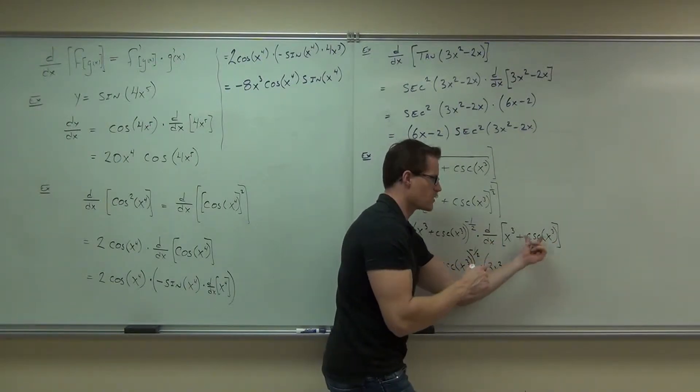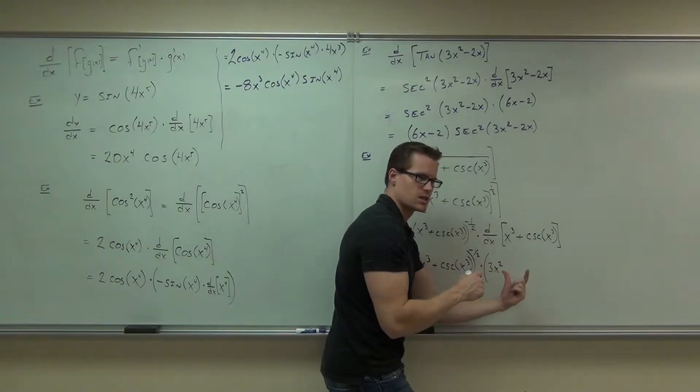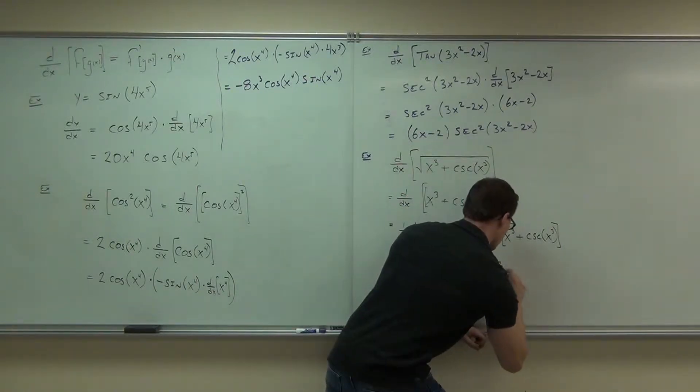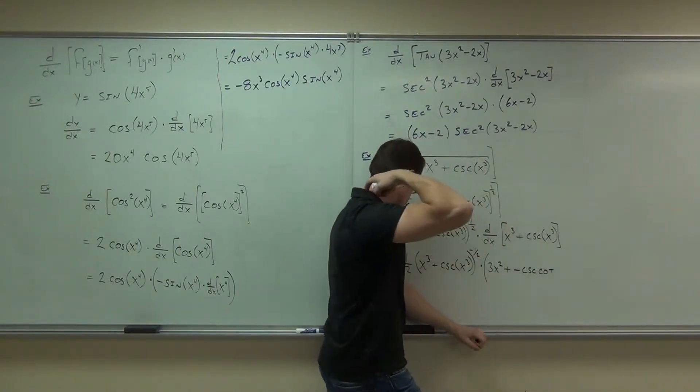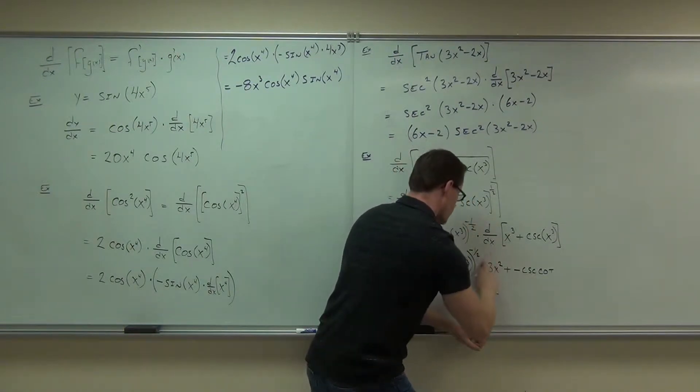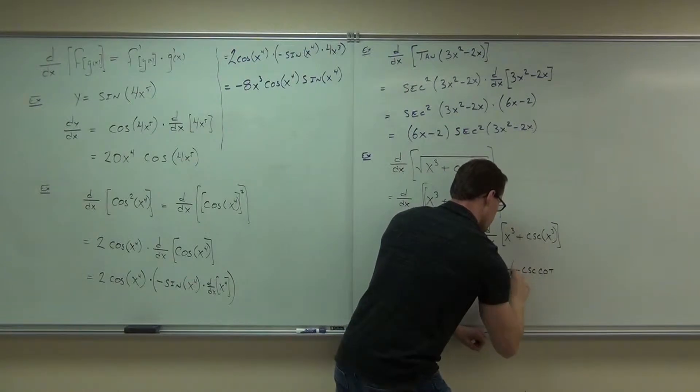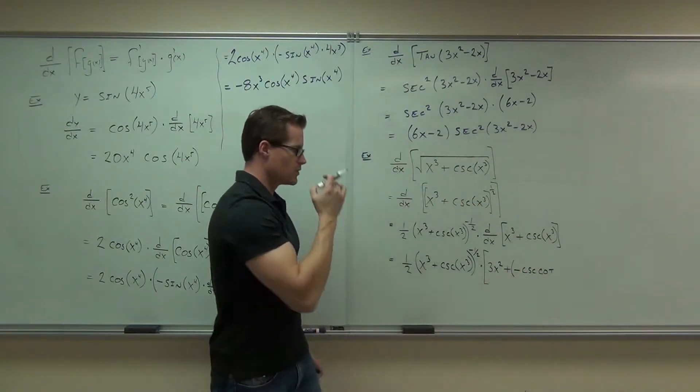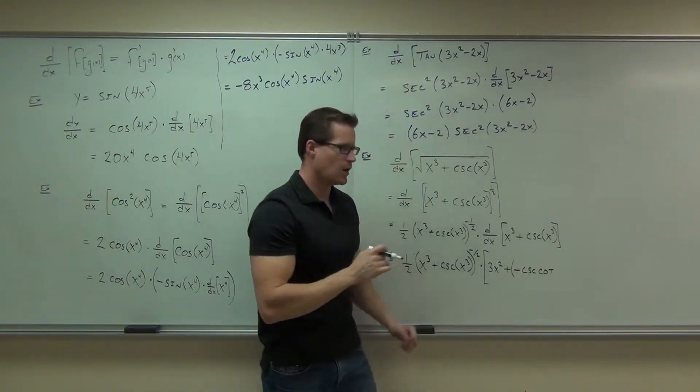What's the derivative? The chain rule says take the derivative of cosecant, so what's the derivative of cosecant? Negative cosecant cotangent. Let me change it to a bracket, too. Negative cosecant cotangent of, of what?